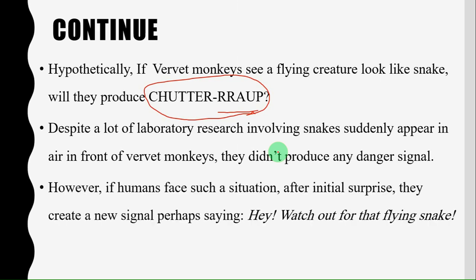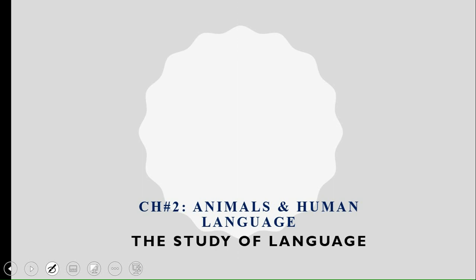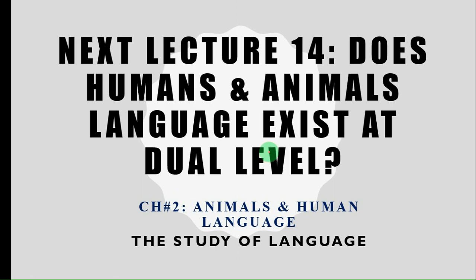On the other hand, human beings would say after an initial surprise, 'Hey, watch out for that flying snake!' Just as discussed, we produce many sounds in our daily lives which do not even exist in the dictionary. This is productivity, and this is all about this lecture. In the next lecture, we will discuss duality — whether human and animal language exists at a dual level or not. I hope you understood this video. Please like, comment with your feedback, and remember me in your prayers. Jazakallah khairan and thank you.